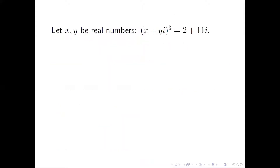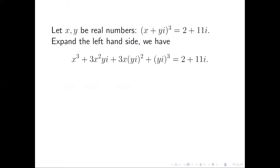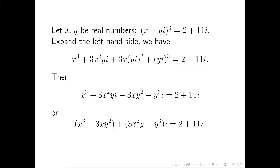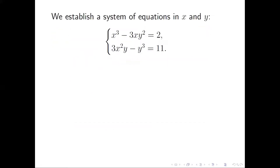The first approach: let x and y be real numbers such that (x + yi)³ = 2 + 11i. Expanding the left-hand side, we have x³ + 3x²yi + 3xy²i² + y³i³ = 2 + 11i. We know i² = −1. We can rearrange the terms based on real and imaginary parts.